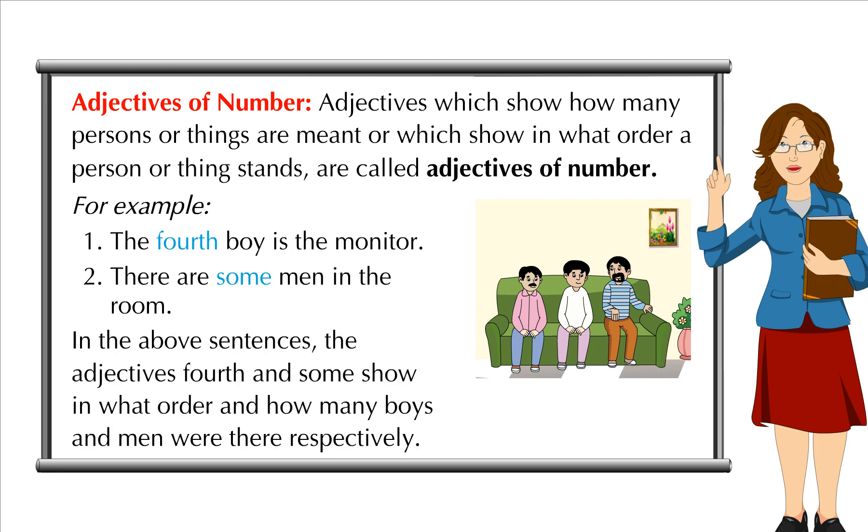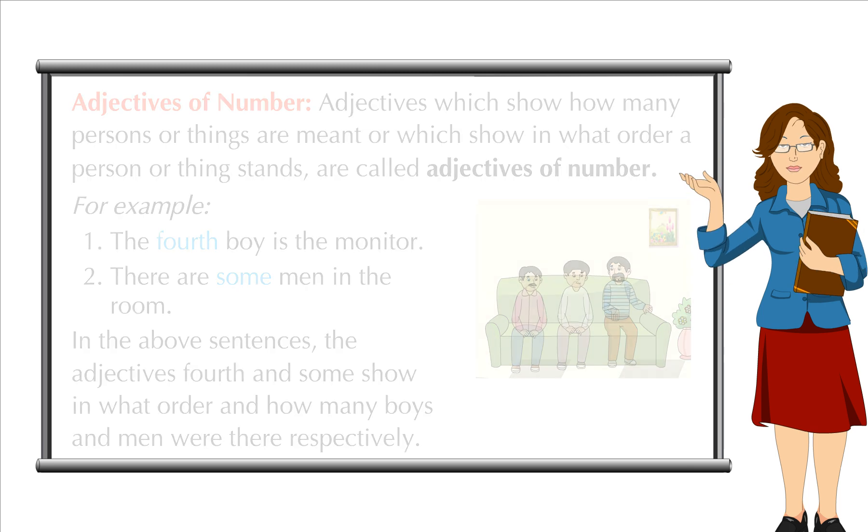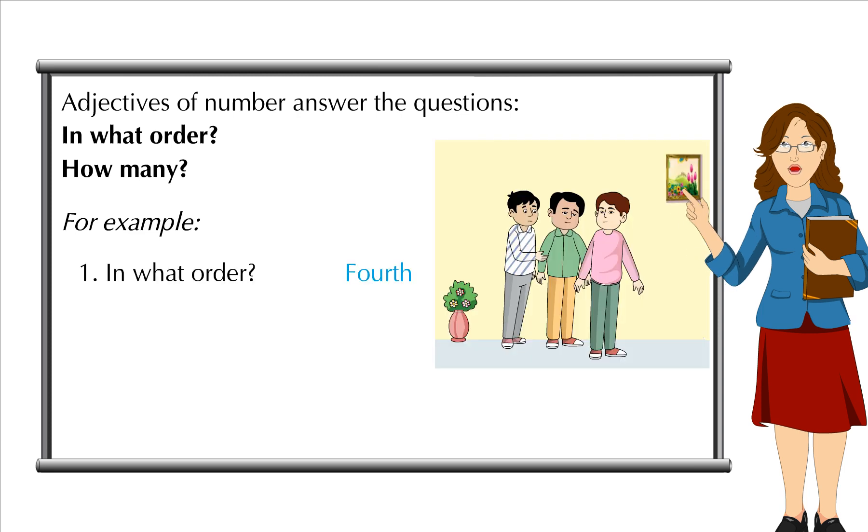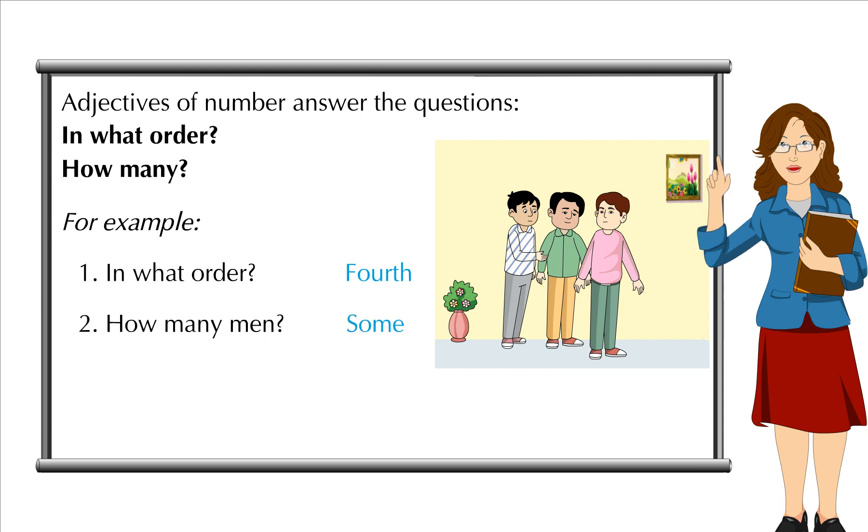In the above sentences, the adjectives fourth and some show in what order and how many boys and men were there respectively. Adjectives of Number answer the questions: in what order and how many.